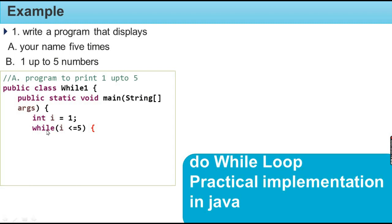Now the while loop condition: `i >= 5` (or `i <= 5`). This condition returns either true or false. If true, the while loop body executes the statement. If false, the while loop body skips the statement.